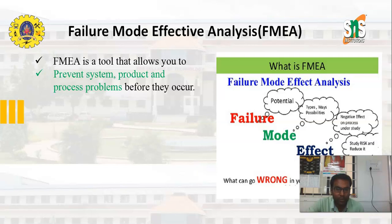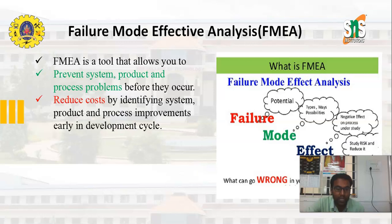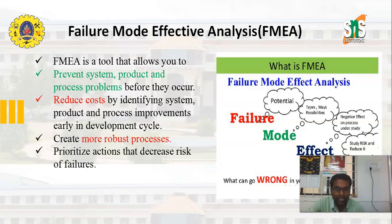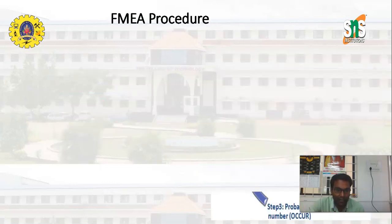FMEA is a tool that allows you to prevent system, product, and process problems before they occur. With its help, we can reduce cost by identifying system, product, and process improvements in the development stages itself. It helps create more robust processes and prioritizes actions that decrease the risk of failures.